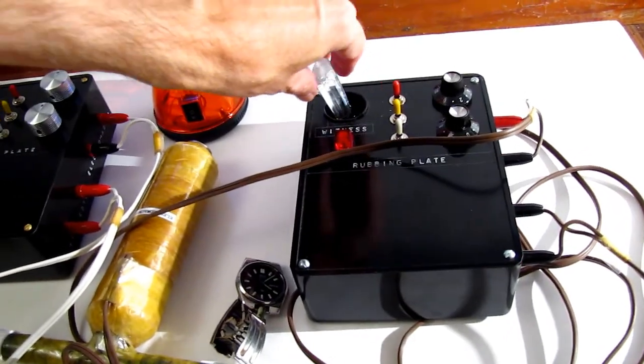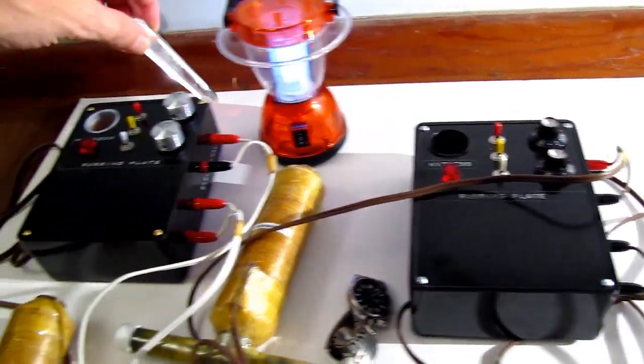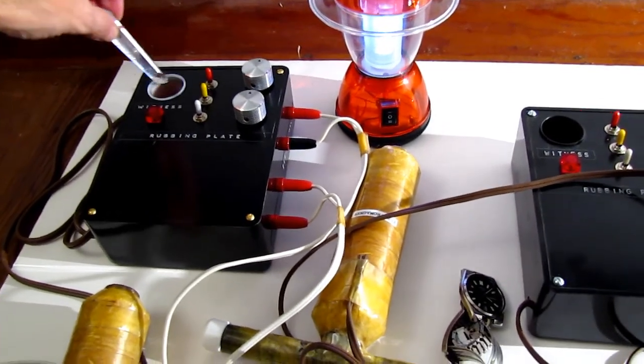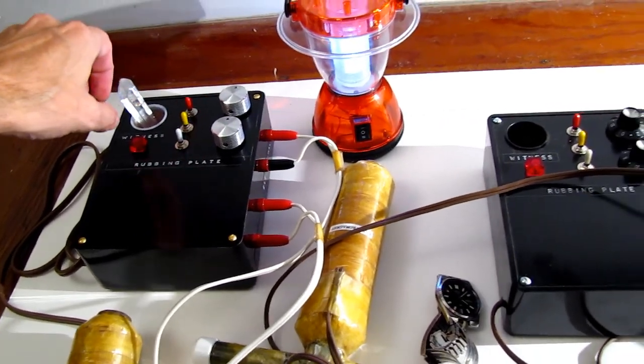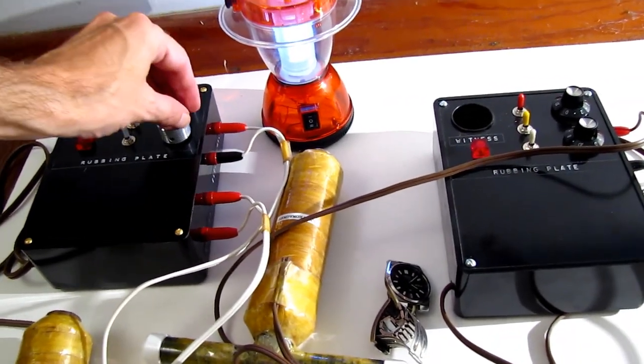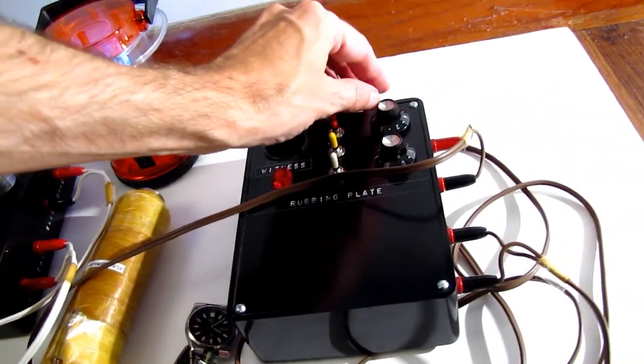You can see some differences. This one has a black witness well, this one has a gray witness well. This one has silver knobs, this one has black knobs.